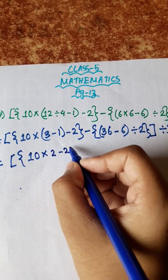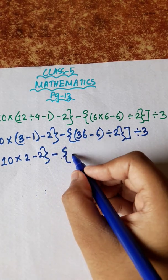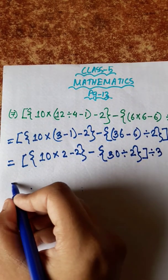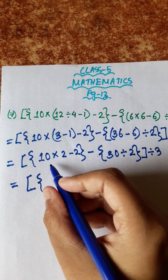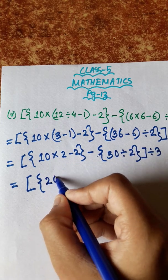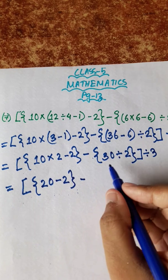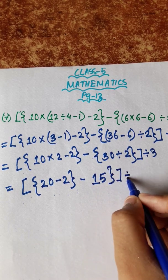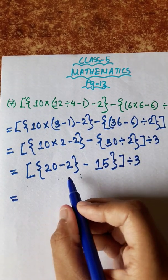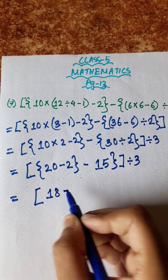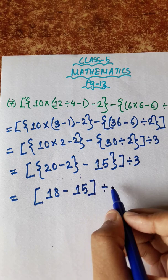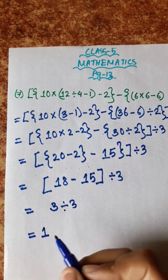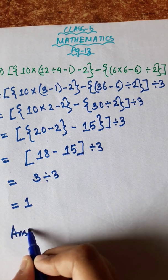1 is equal to 2, and 36 is equal to 6, and 6 is equal to 30. 10 into 2 is equal to 20, minus 2 equals 30, divided by 2 equals 15. 20 minus 2 is equal to 18, minus 15, divided by 3 equals 3. 3 divided by 3 is equal to 1. So answer is 1.